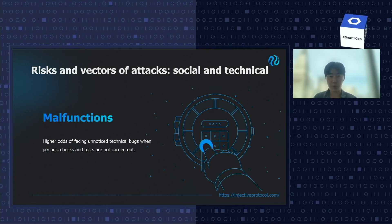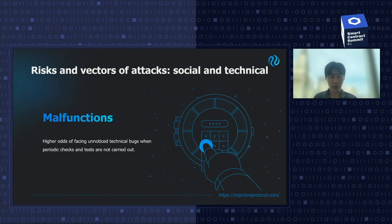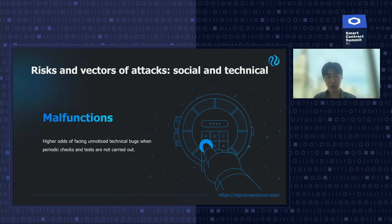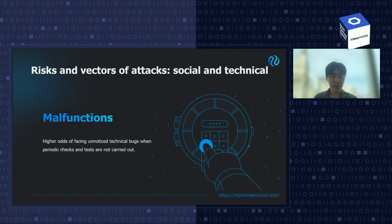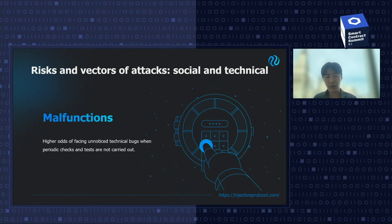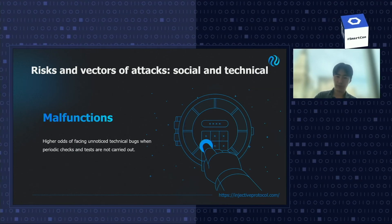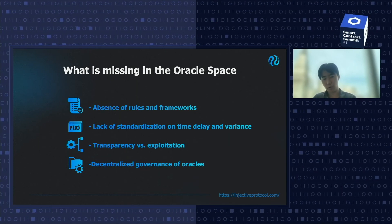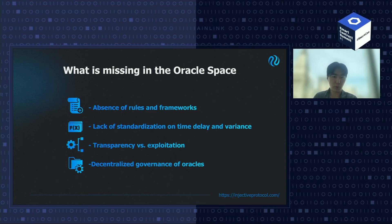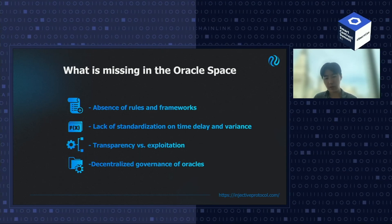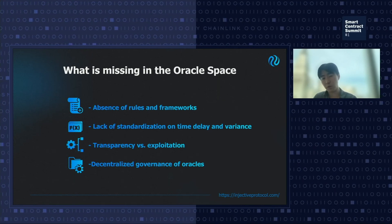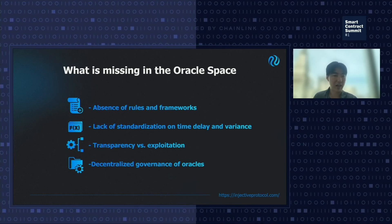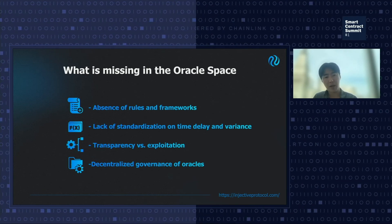As mentioned before, manipulations and malfunctions caused by oracles have created premature liquidations and hanging price feeds that have led to hacks. Synthetix has faced similar issues in earlier days. Looking forward, what's missing in the oracle space? First, there's an absence of rules and frameworks. For any project trying to select an oracle, you don't really know what to look for, what's deemed secure, or whether there's a standard for evaluating security parameters and price feed quality. Many new DeFi products just go with the Uniswap price feed, which might not be the best for their use case.